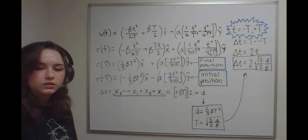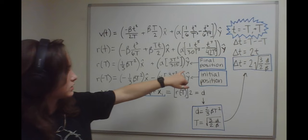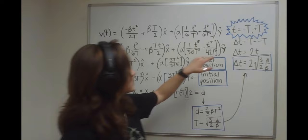If we evaluate r of t at initial and final times, we can get the initial and final position. From this over here, we have t and t values.